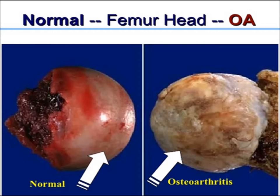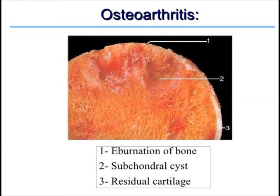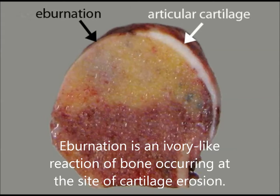This is the normal femur head — a smooth, shiny surface — and in osteoarthritis it is roughened. There are three features: eburnation of bone, subchondral cyst, and residual cartilage. Eburnation is an ivory-like reaction of bone occurring at the site of cartilage erosion. Because articular cartilage acts as a shock absorbent, if it is lost, there is pain while walking.